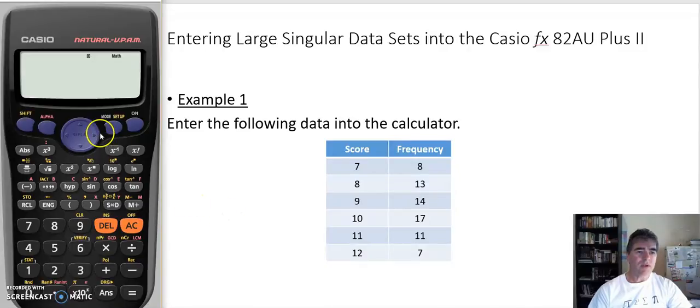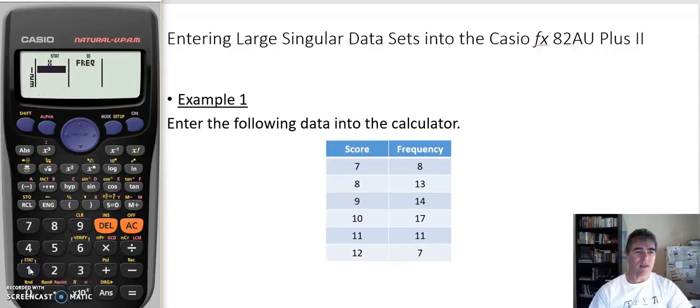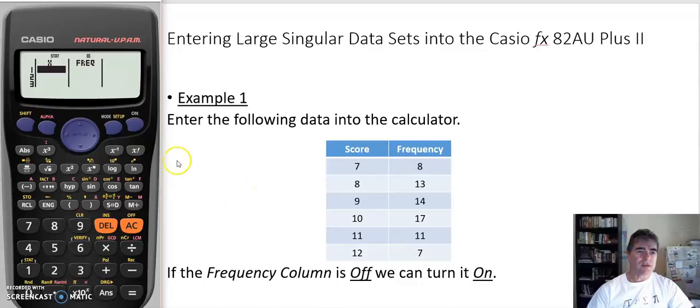To do that, we put it into statistics mode. Go to our mode button, there's our statistics number two. And remember it's single variable or one variable, so we're after number one there. You can see that we've got that already set up, our frequency column, our score and frequency like we have there.